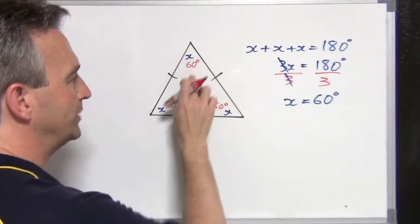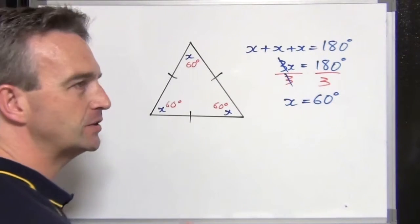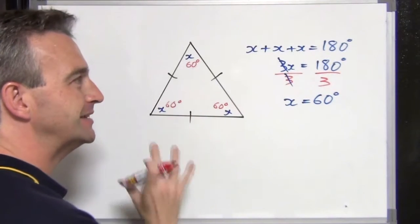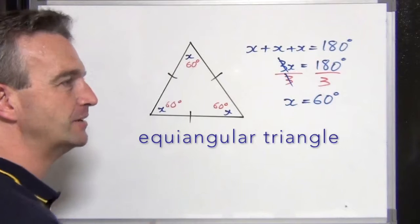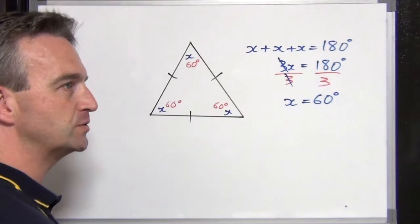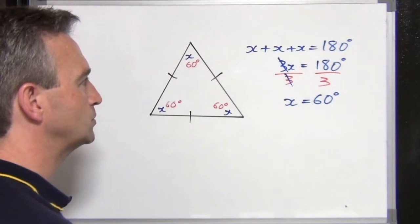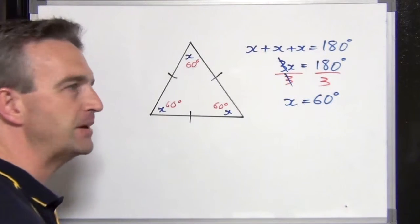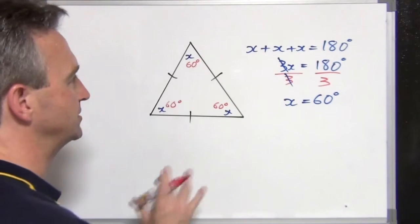If we are told that all three angles of a triangle are equal and we're told nothing about the sides, then it is the same triangle, but in that situation it's better to call it an equiangular triangle. Equiangular triangles will always be equilateral, and equilateral triangles will always be equiangular. It just depends on the information you're given as to how you'd first describe it.